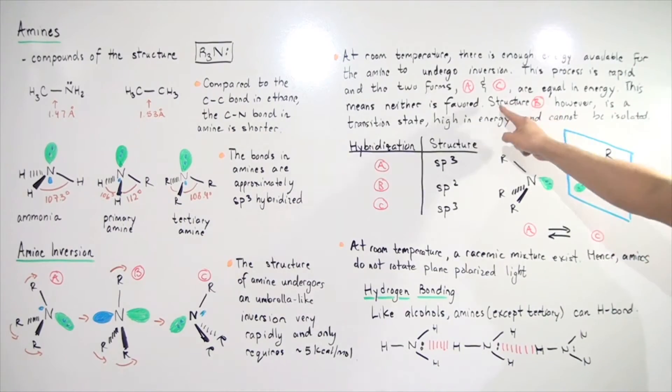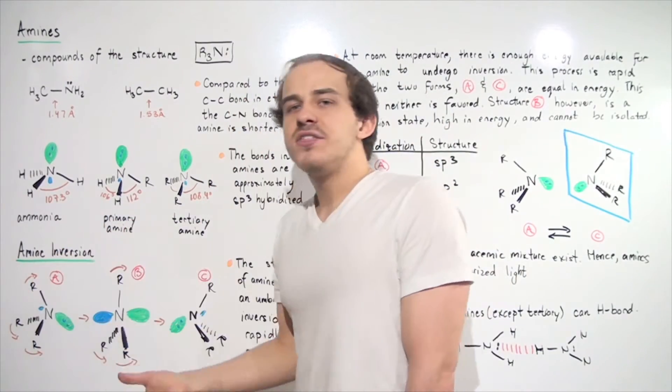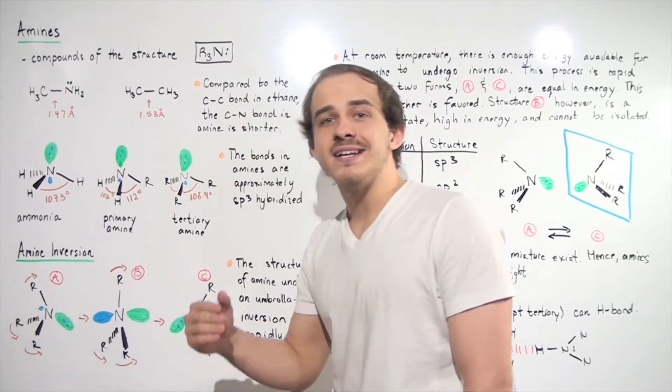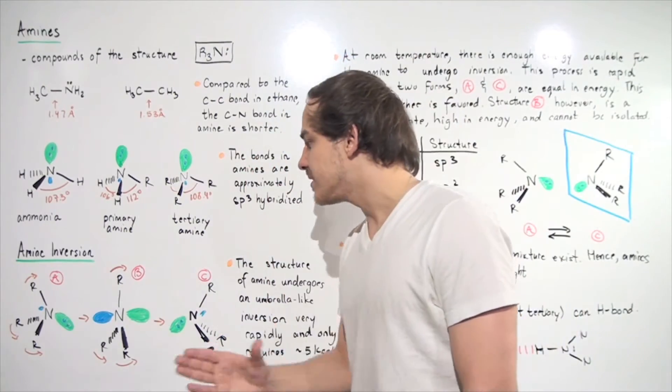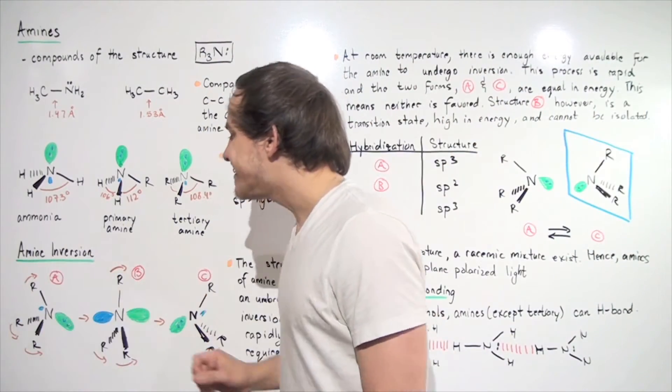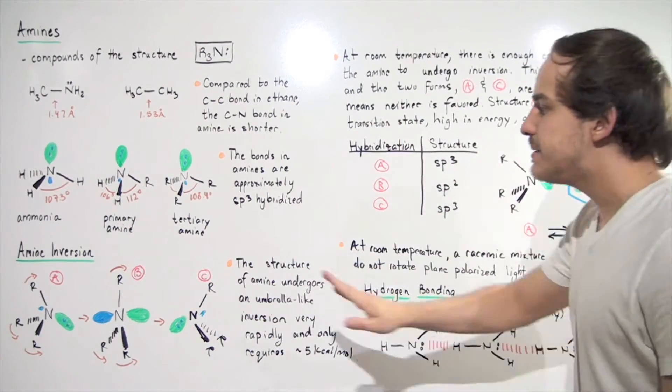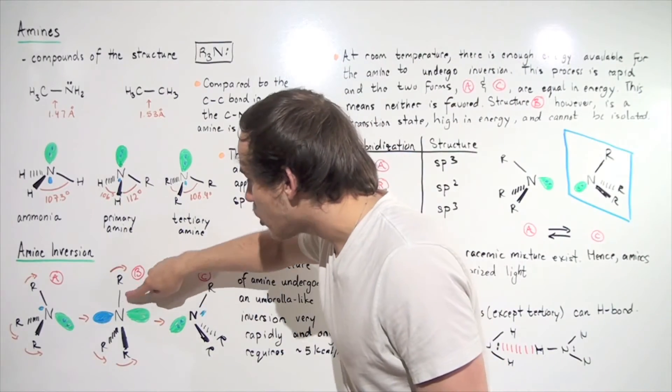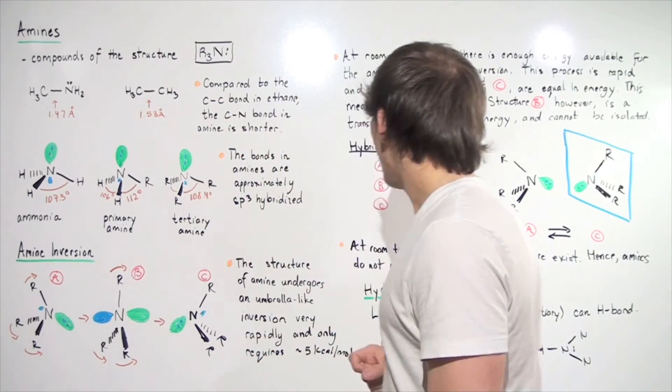Unlike A and C, structure B is a transition state. When A goes to C and C goes to A, they undergo this transition state. They go through this transition state, and this transition state is an energy maximum. That means it has more energy than either of these compounds, A and C. And we will never be able to isolate this compound B, our transition state. Now let's compare the hybridization between A, B, and C. A and C, the bonds are sp3 hybridized. In B, the bonds are sp2 hybridized. That means in our transition state, the angle between R and R is 120 degrees.